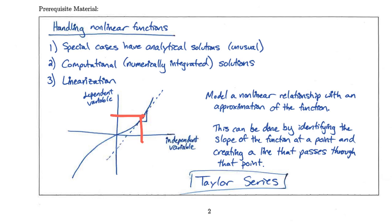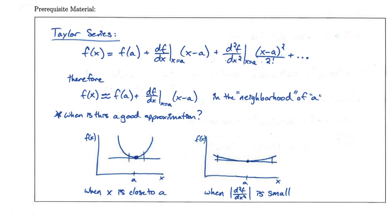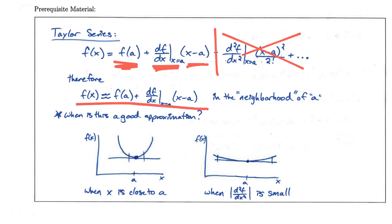The second term of the Taylor series is the slope of the line passing through that point, obtained by evaluating the derivative at that point. The Taylor series gives us the value of the function, the value of the slope, and how far we've gone along that slope. If we cut off the Taylor series at this point, we end up with an approximation of the nonlinear function in the neighborhood of A, or the neighborhood of the operating point.